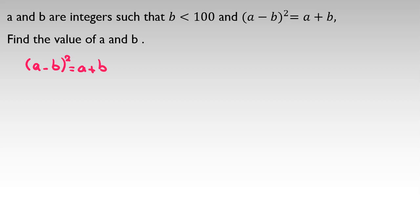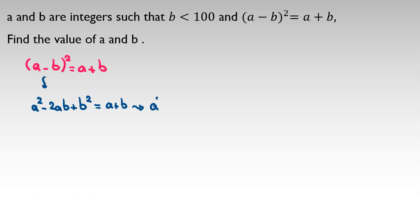For finding this, A minus B squared, we have the identity — you should memorize — that A minus B squared is A squared minus 2AB plus B squared, and the right hand side is A plus B. Now I take all things to the left hand side: A squared minus 2AB plus B squared, minus A minus B equals 0.